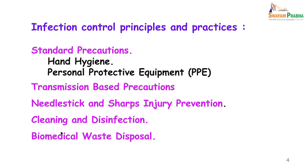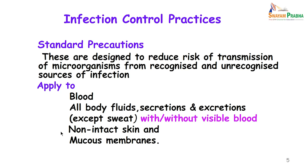Let us look at the common infection control principles and practices. We start with standard precautions, which involve hand hygiene and personal protective equipment. These standard precautions were earlier referred to as universal safety precautions and are designed to reduce the risk of transmission of microorganisms from either recognized or unrecognized sources of infection.